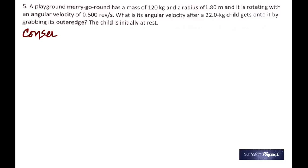In this question, a merry-go-round in a playground, mass given 120 kg, radius is 1.80 m, and it's rotating with an omega of 0.5. What is its angular velocity after a 22 kg child gets onto it by grabbing its outer edge? Now here you have to apply the conservation of momentum, conservation of angular momentum.